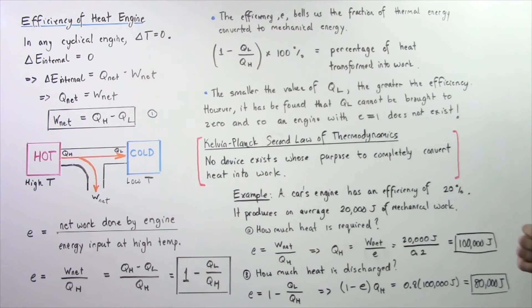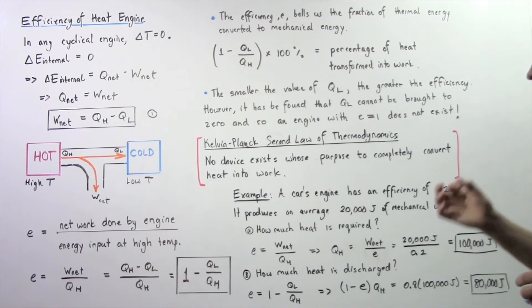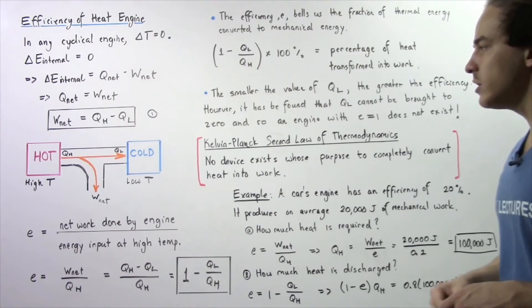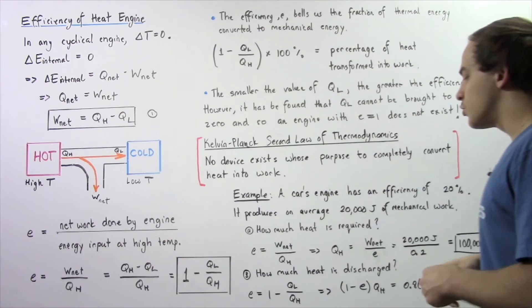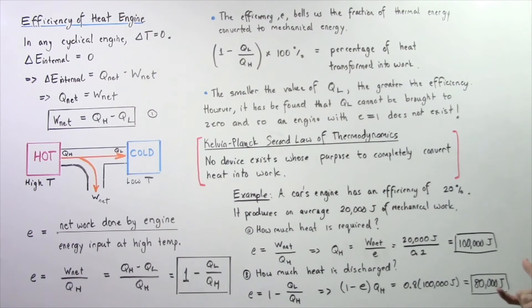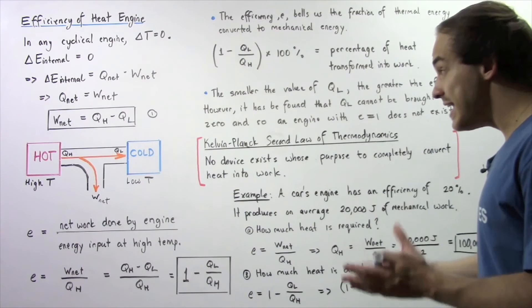Let's look at an example. A car's engine has an efficiency of 20%, so our E value is 0.2. It produces on average 20,000 joules of mechanical work. In part A, how much heat is required? We're looking for Q_H. Using the efficiency equation E equals W_net divided by Q_H, we rearrange to get Q_H equals W_net divided by E. So Q_H equals 20,000 joules divided by 0.2, which gives us 100,000 joules of heat required.